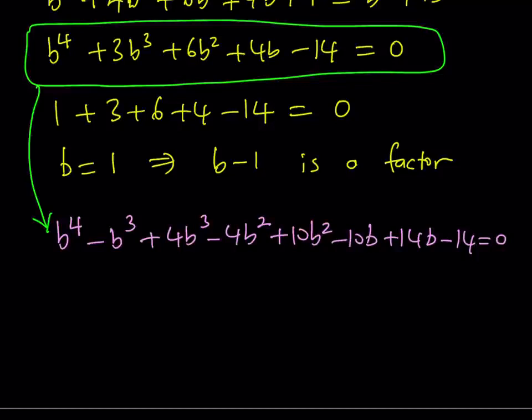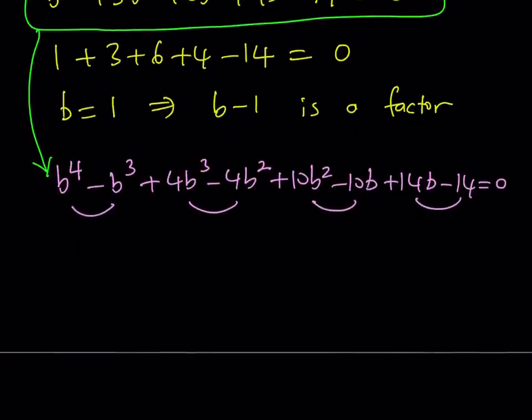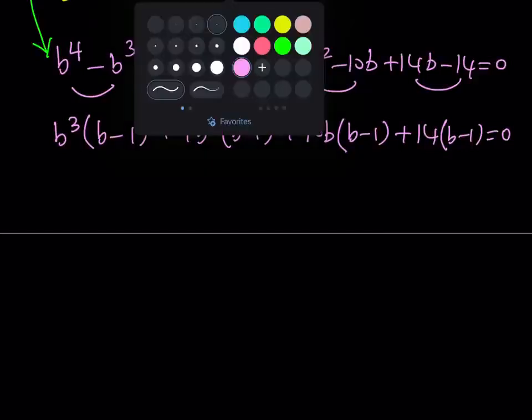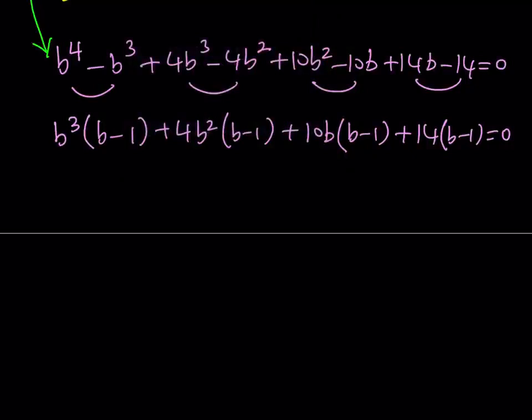Now this equation is factorable by grouping of course so I'm going to be splitting it up into groups of 2 and then factor each one. So we know that B minus 1 is going to be a factor but this just verifies it. B cubed times B minus 1 and then plus 4B squared times B minus 1 and then 10B, 2B I should put a 2B there so I can make the joke like 2B or not 2B, but anyways 10B multiplied by B minus 1 plus finally 14 times B minus 1 and the whole thing equals 0. Notice that B minus 1 popped up everywhere. That was expected because we knew that B minus 1 is a factor because B equals 1 is a solution.